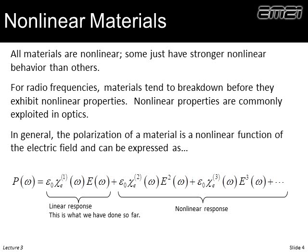Recall from last time: we had an electron cloud buzzing around the nucleus and it was symmetric. An electric field comes along and pushes the electron cloud and the nucleus in opposite directions, inducing an electric dipole. The electric field is oscillating, so this electron cloud shakes back and forth around the nucleus, re-radiating tiny waves. We averaged that effect over trillions of atoms and got an overall slowing response called the dielectric response.